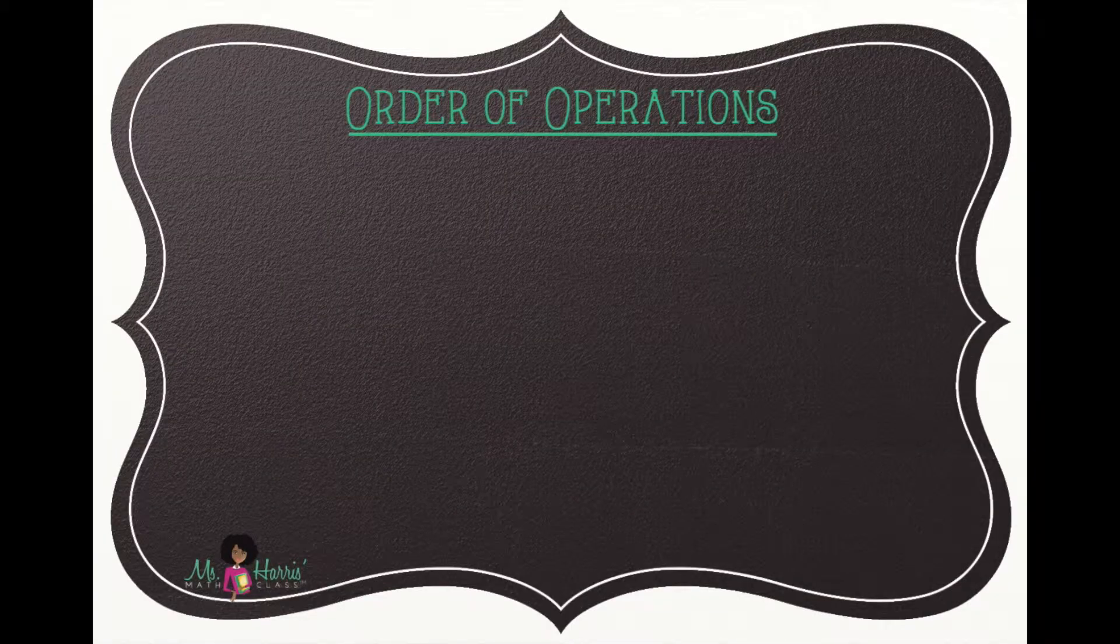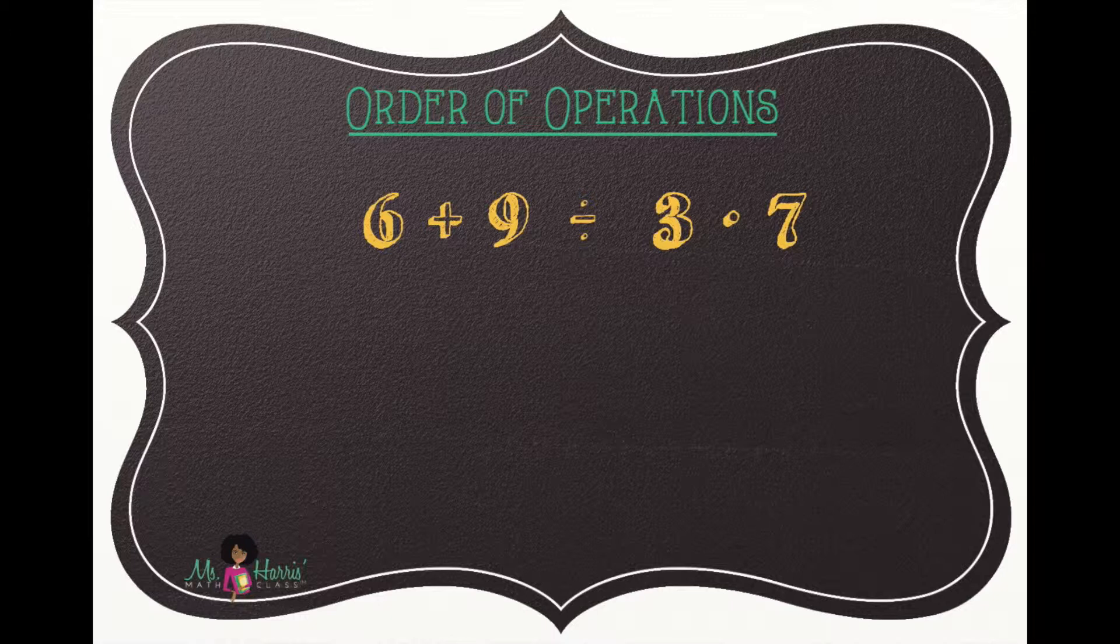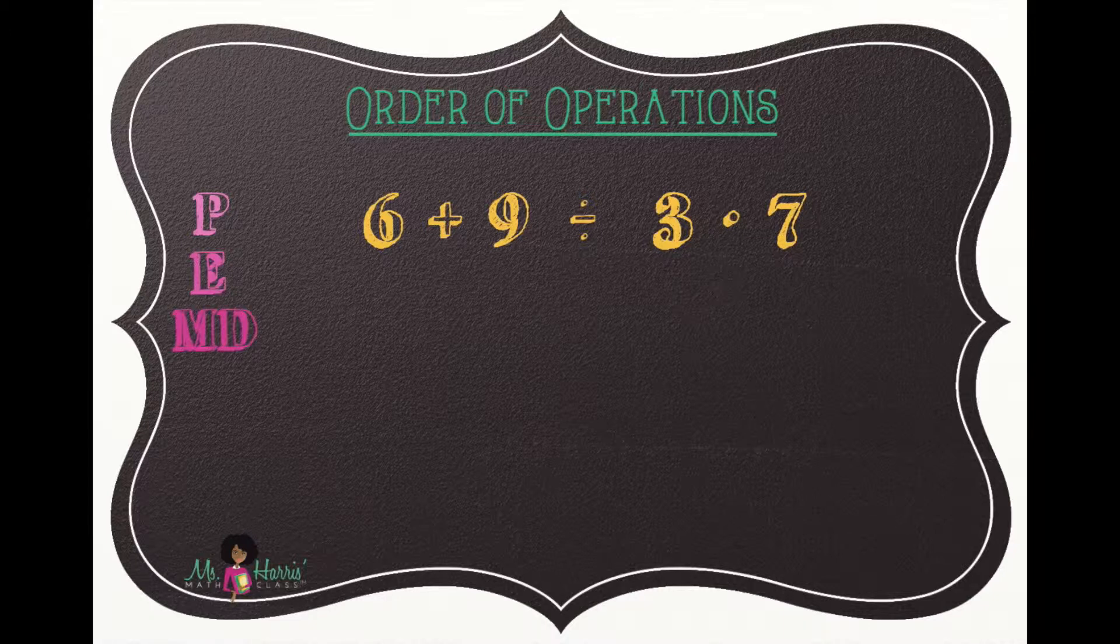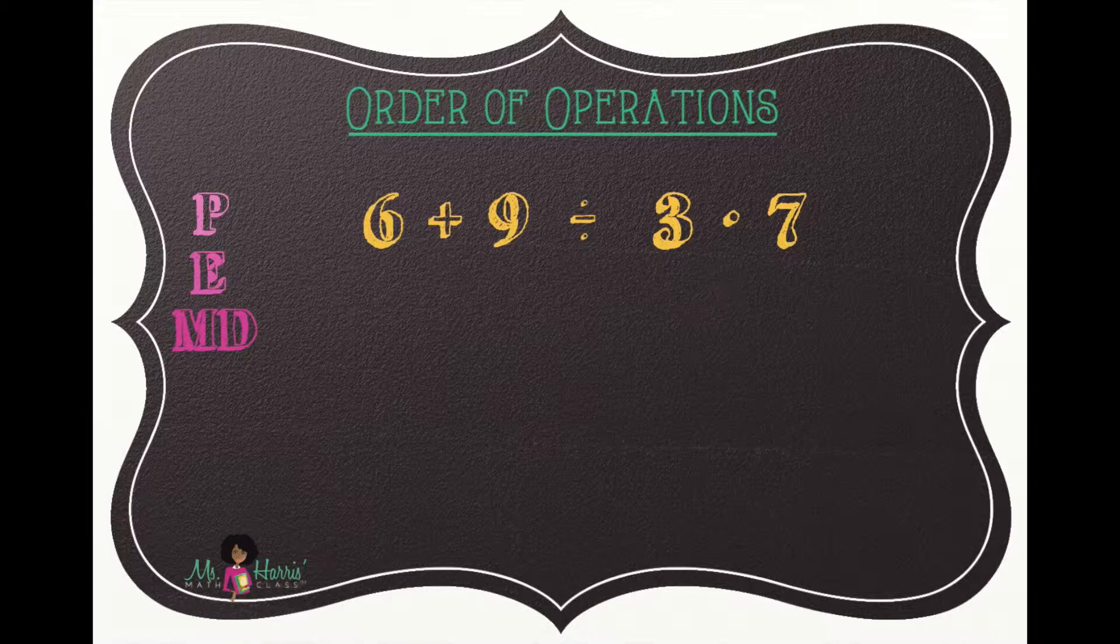Let's take a look at our first problem. Six plus nine divided by three times seven. We begin by going through the letters that comprise PEMDAS until we can identify which operation we should do first. There aren't parentheses or exponents, but we do have multiplication and division. Now remember multiplication and division are on the same level, so we work from left to right.